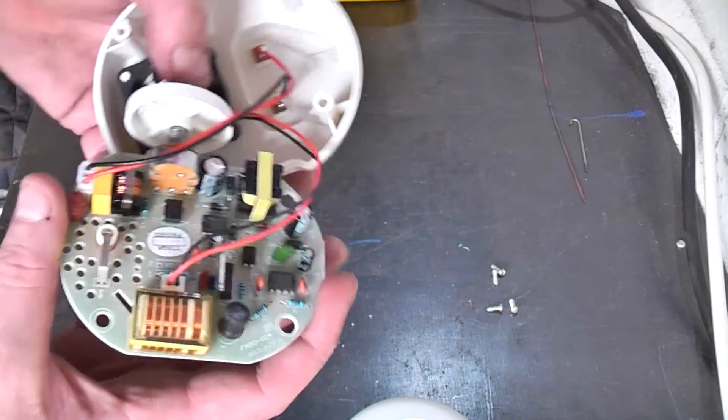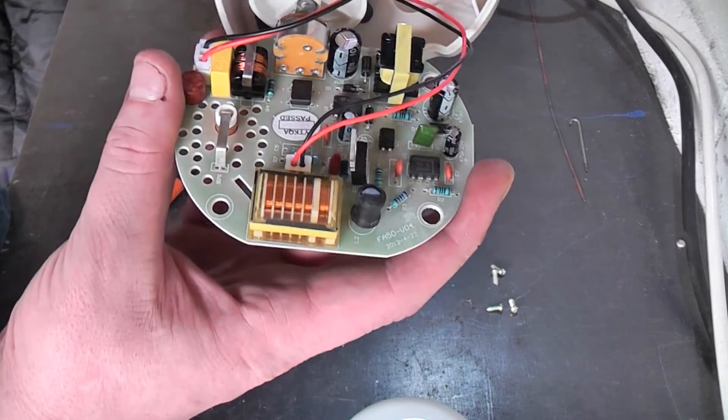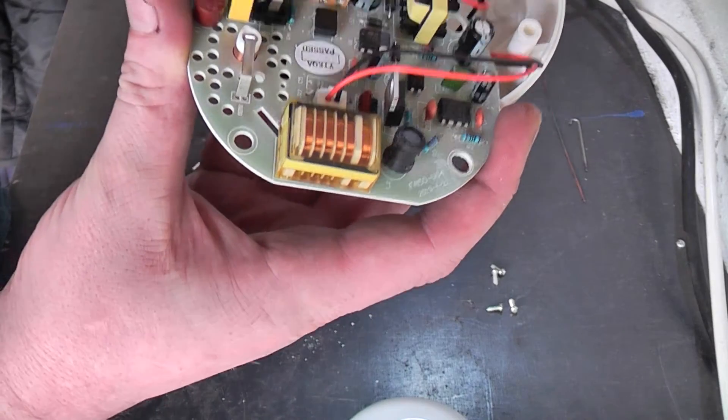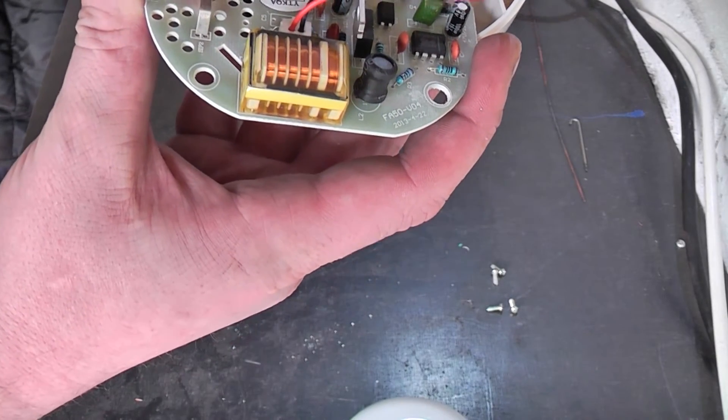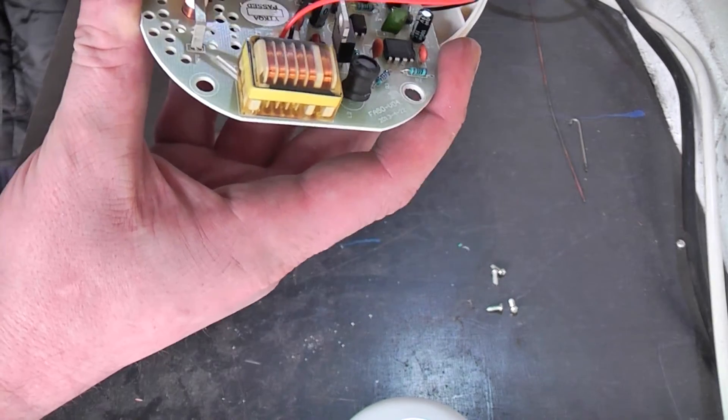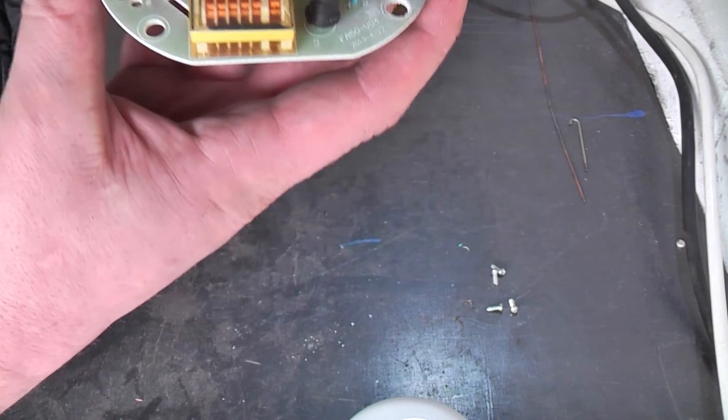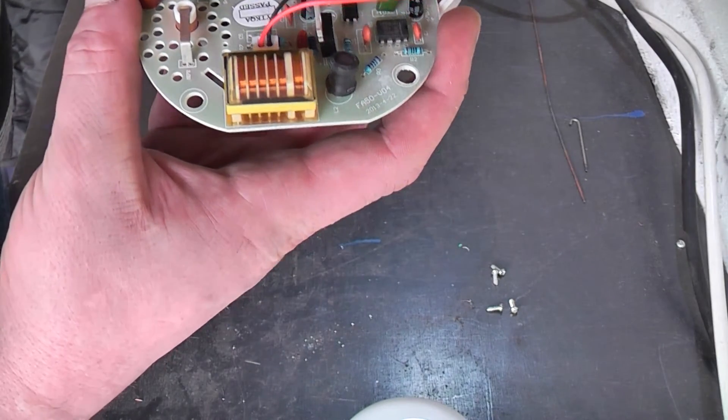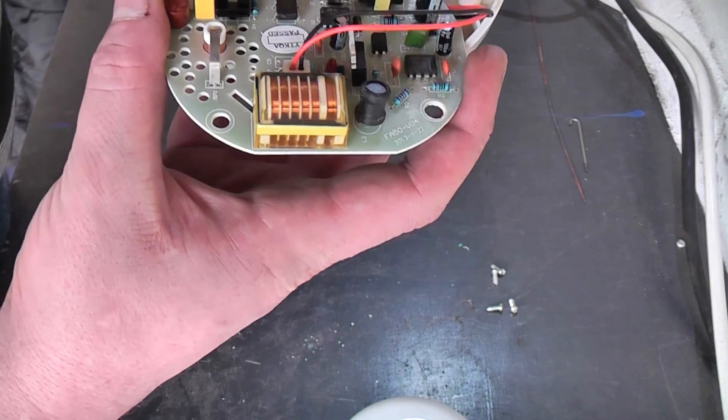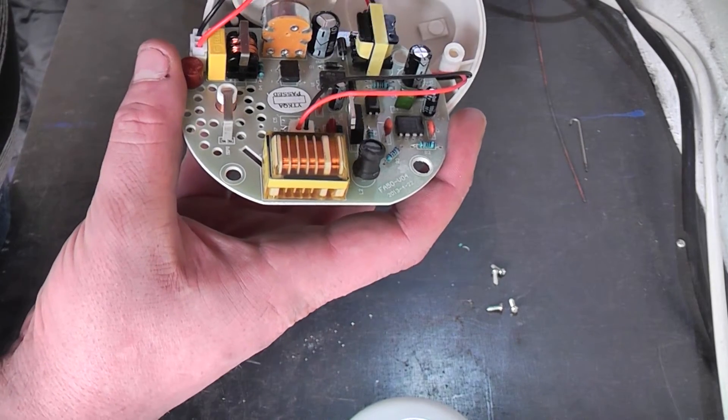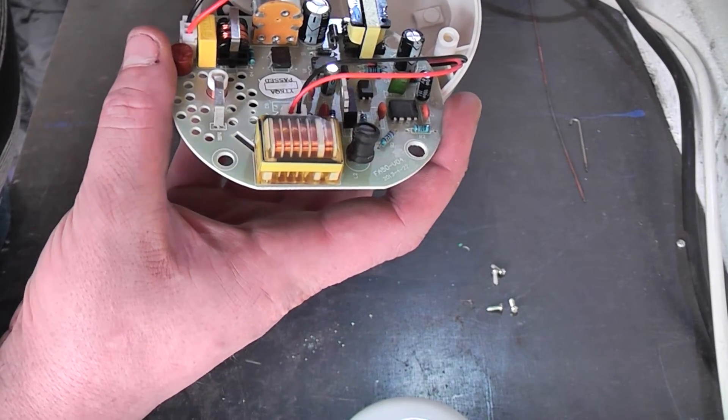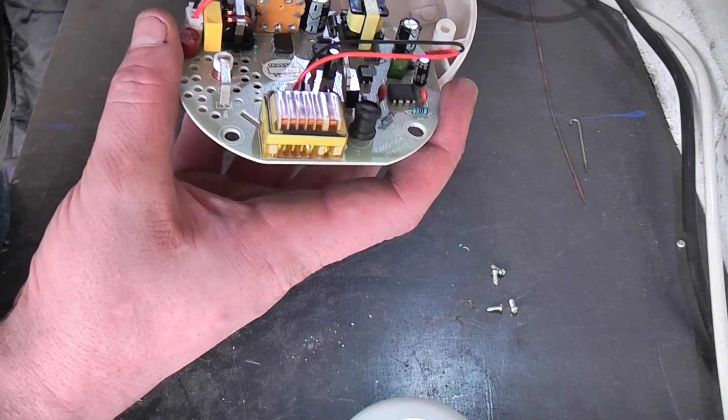The mains comes in and it does go through a fuse, small common mode suppression. Here's the on-off switching. What it looks like they're doing here is they're stepping the 240 volts down to 12 volts because I'm only guessing it's 12 volts because it's got a 12 volt fan in it.